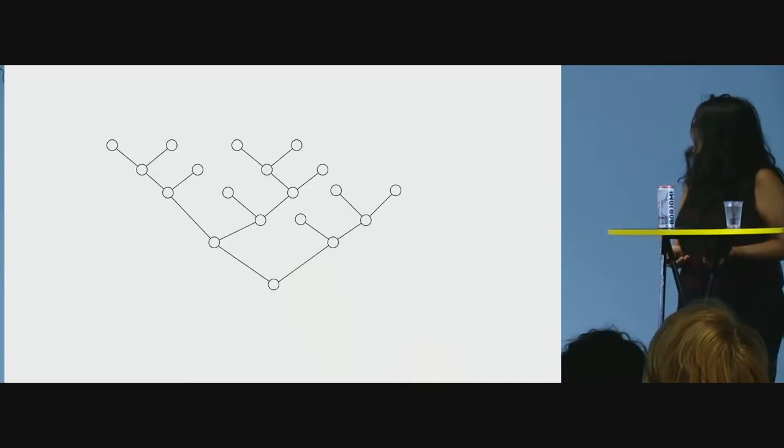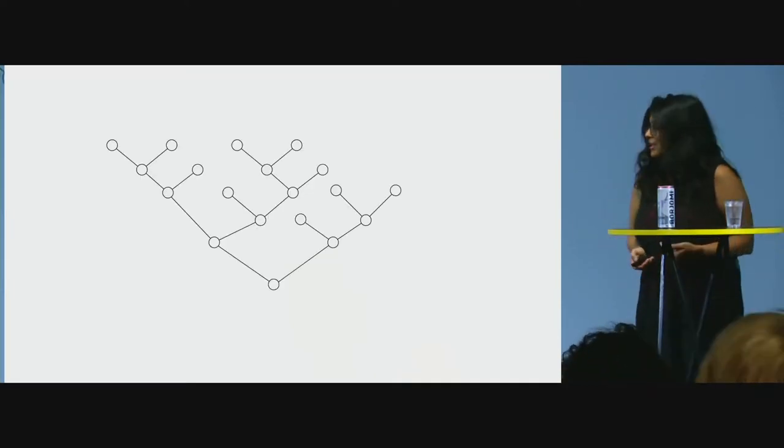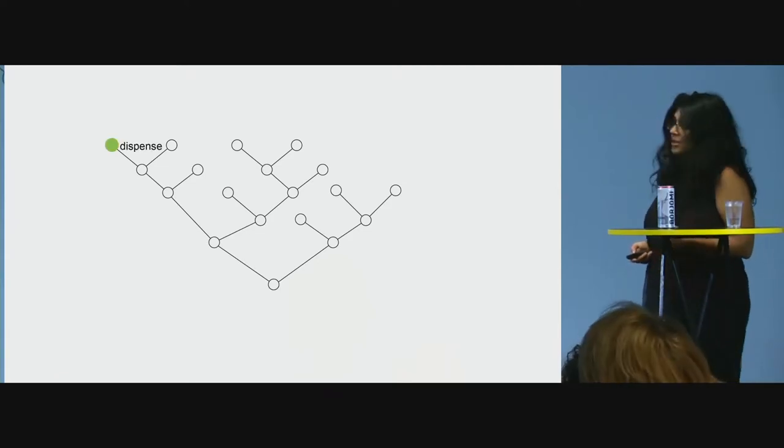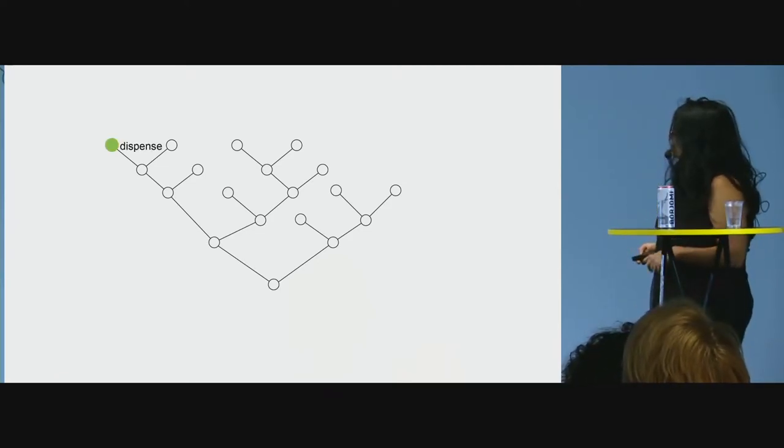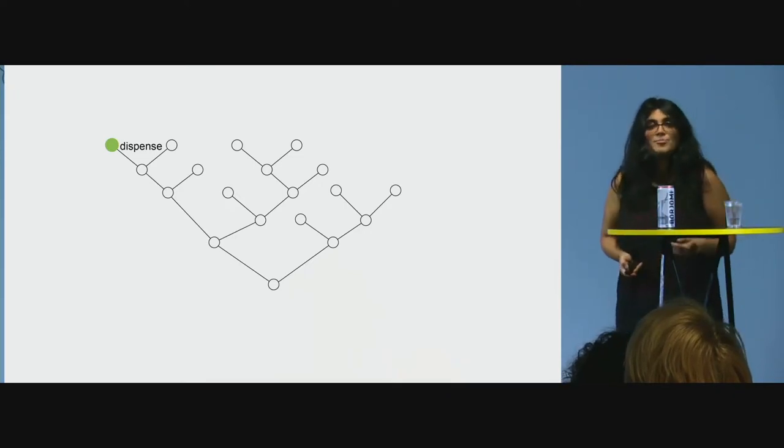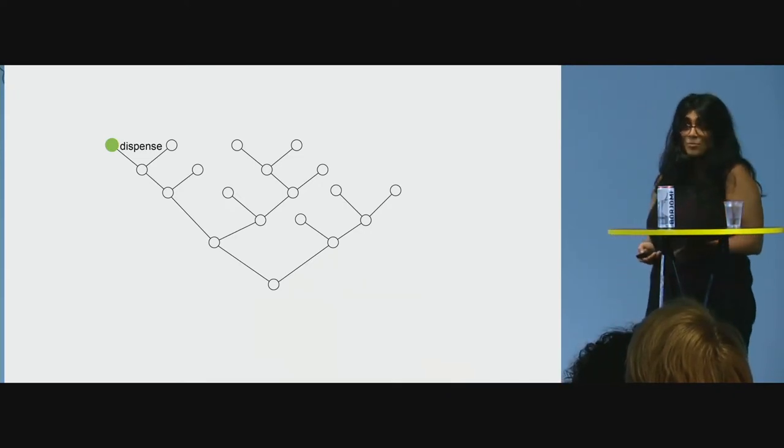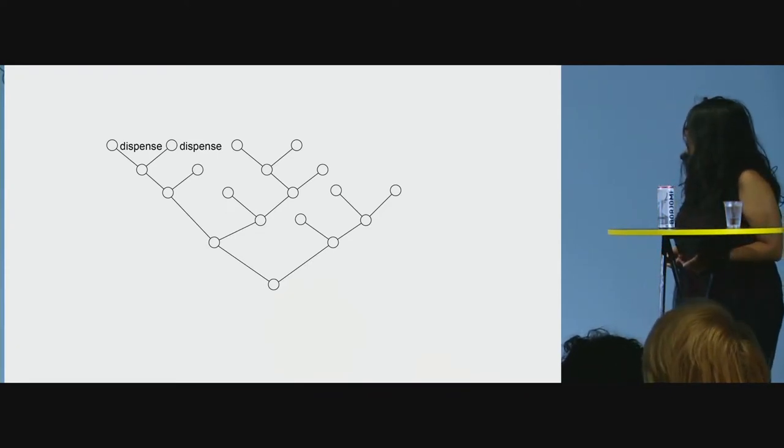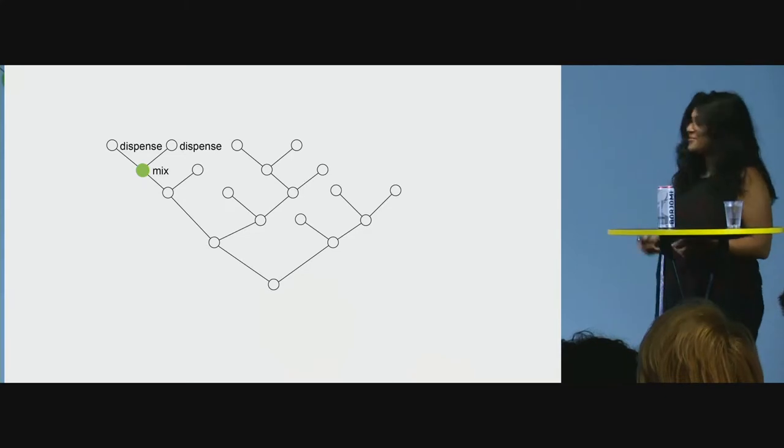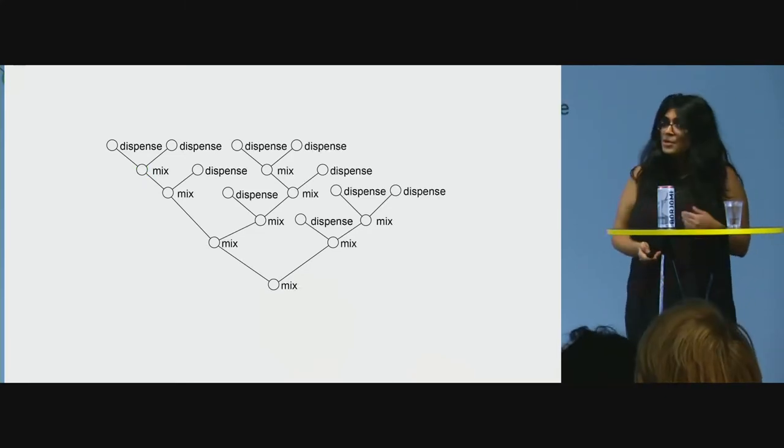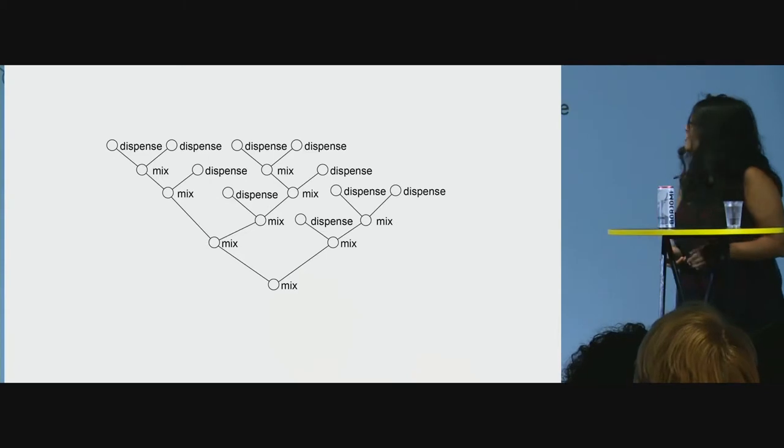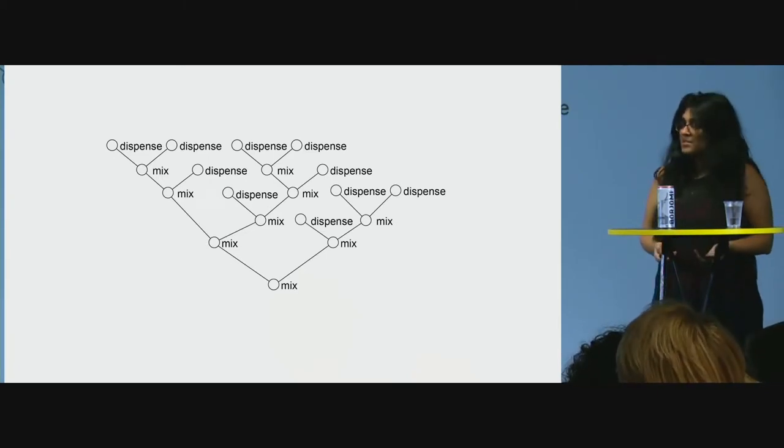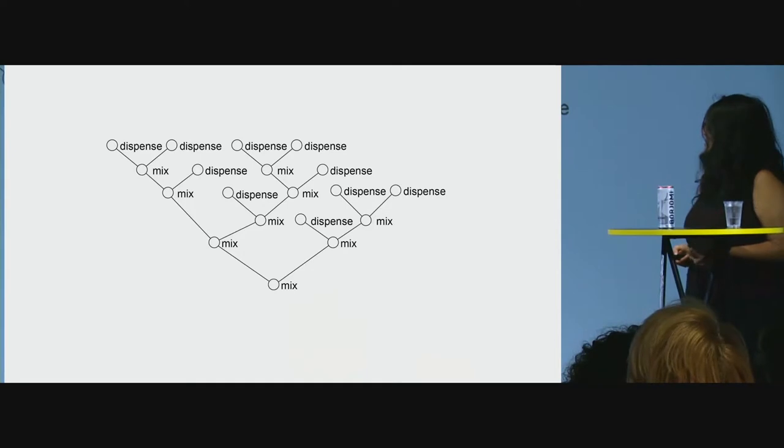So I went ahead and modeled it as a graph where each node is an operation on droplet, like dispensing a droplet, and each edge represents a dependency. For example, we have two droplets that are being dispensed and then the results of the dispensing operation, they go into the next operation which is a mixed operation. Now we can use the graph model to model a complete bioprotocol by simply putting the operations and the dependencies between them.